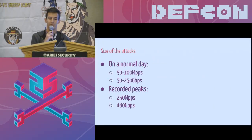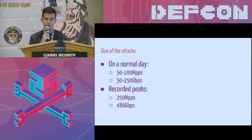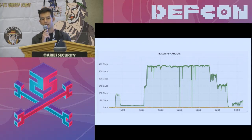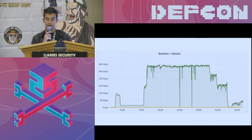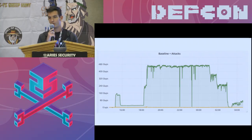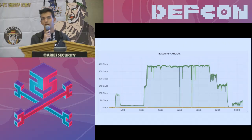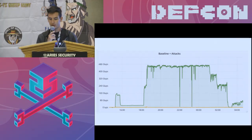On a daily basis we have to deal with hundreds of different DDoS attacks. To give you some numbers, on a normal day we see attacks ranging from 50 to 100 million packets per second and from 50 to 250 gigabits per second. But we have also seen much bigger attacks. This graph shows one of the biggest TCP SYN floods we recorded a few months ago. The green line represents the attack traffic volume while the small yellow line at the bottom represents the legit traffic. The job of my team is to drop all the green malicious traffic before it hits our servers without affecting the small portion of yellow legit traffic.